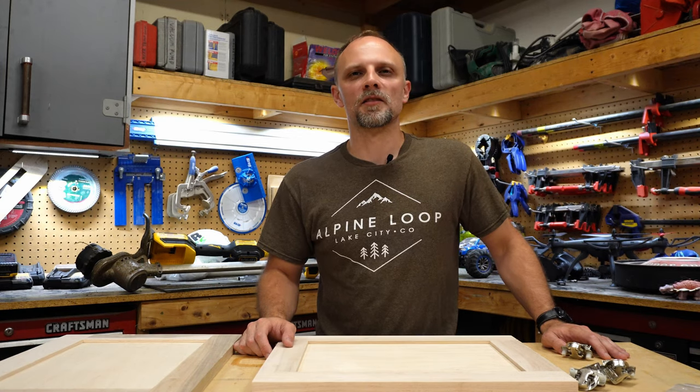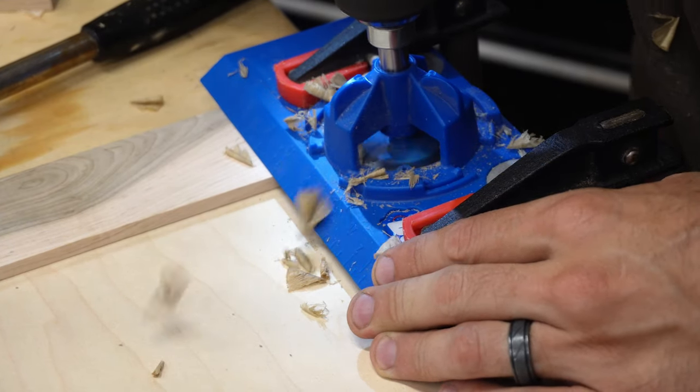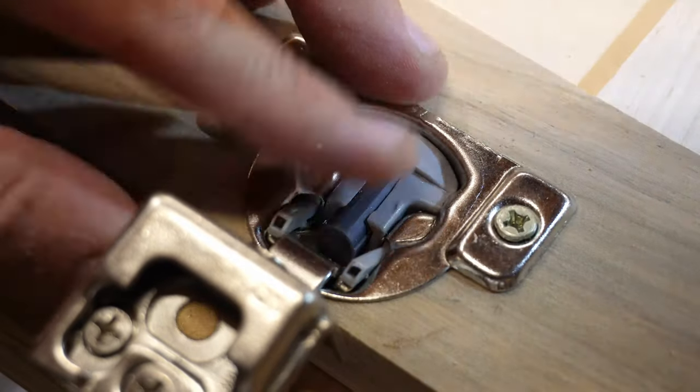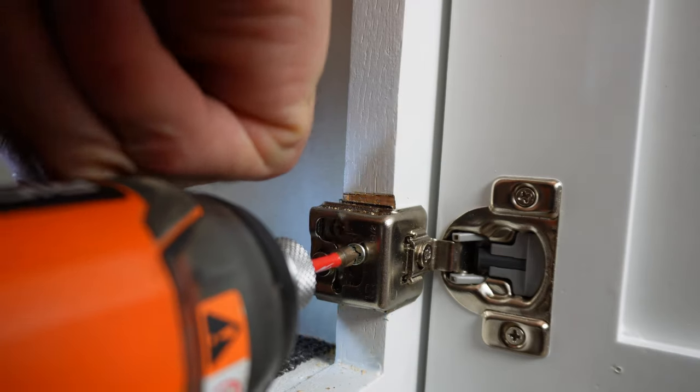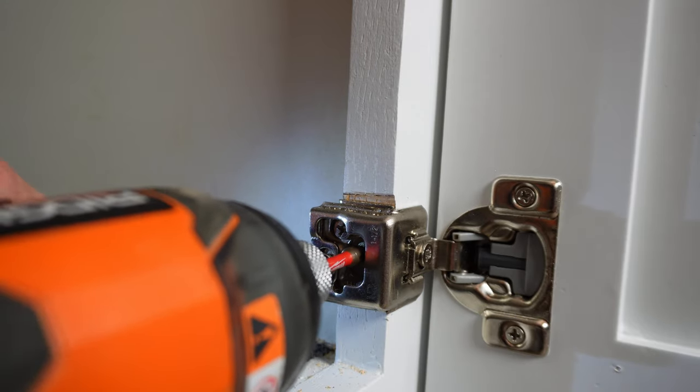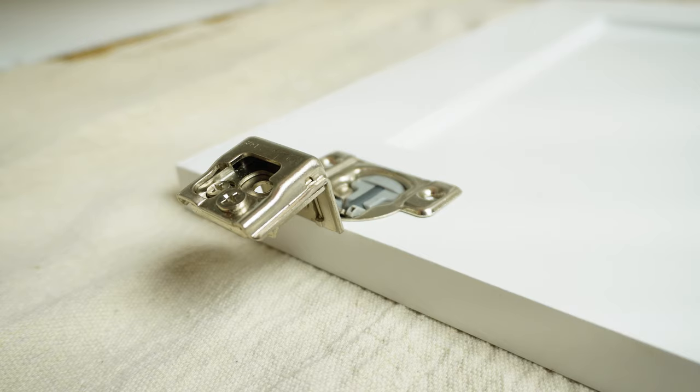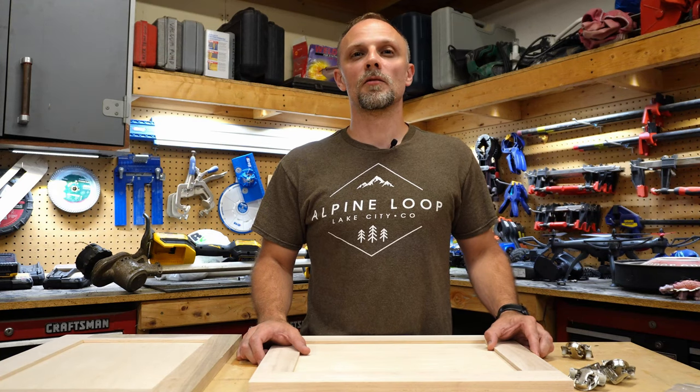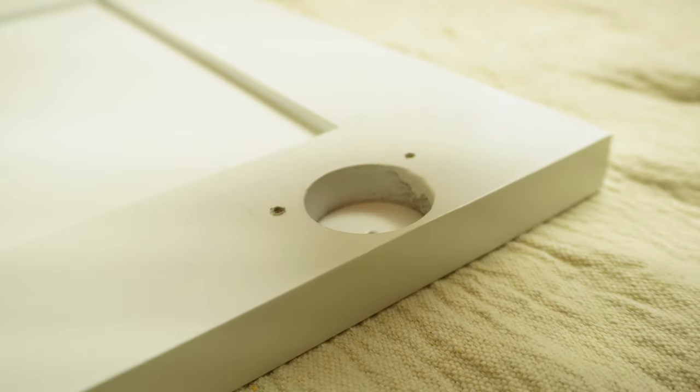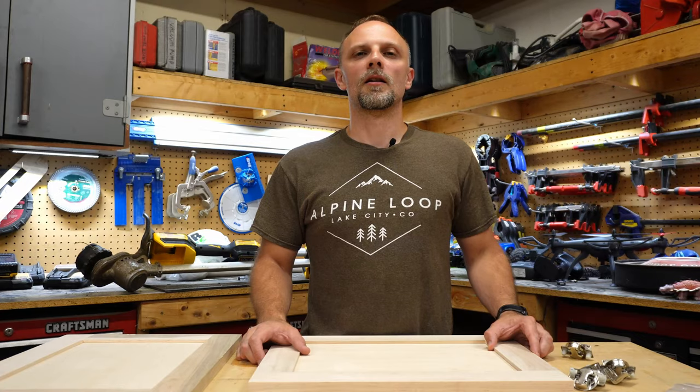All right. So the next steps in this process is boring the holes in the doors and mounting the hinges. And how these concealed hinges work is one half of the hinge gets attached to the inside of the face frame and the other half of the hinge gets attached to the cabinet door. And in order to install the hinge onto the door, you have to bore a hole so that the cup sits inside of the hole. Now, don't let this scare you because it's a pretty easy process.